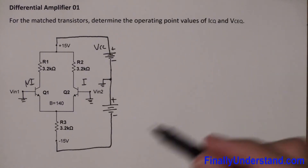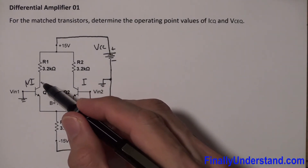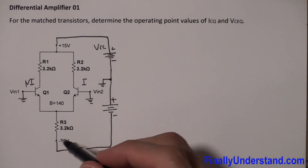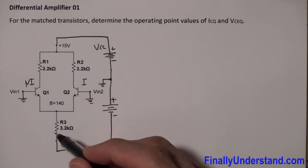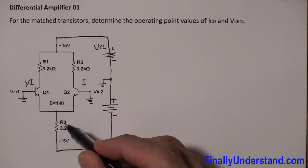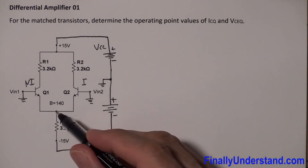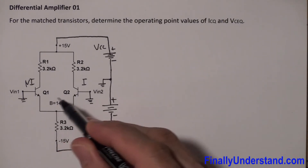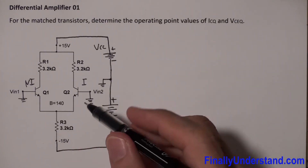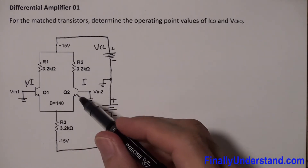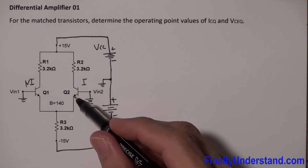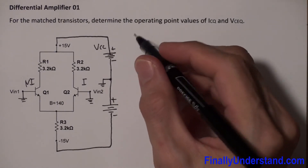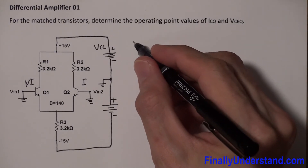Next, in order to find the current which goes through the collector of transistors Q1 and Q2, we first need to find the current through resistor R3. To do so, we find the voltage at this point, which is nothing else but the voltage at the emitter of each transistor. If I find the voltage at one emitter, it's going to be equal to the other — they're the same.